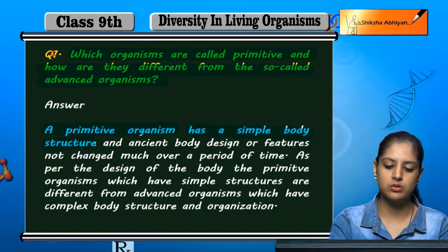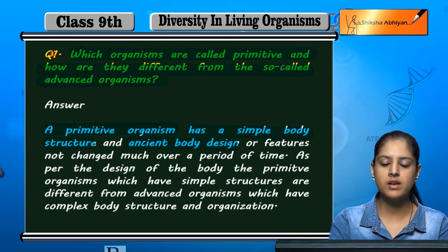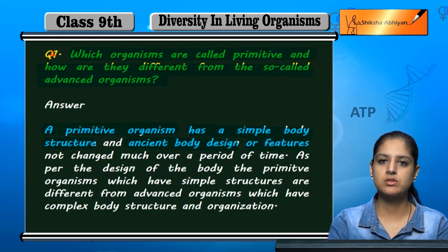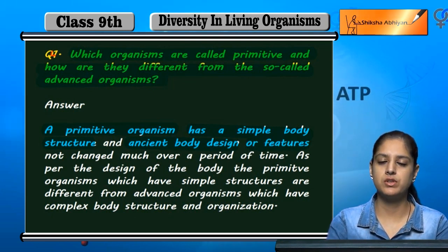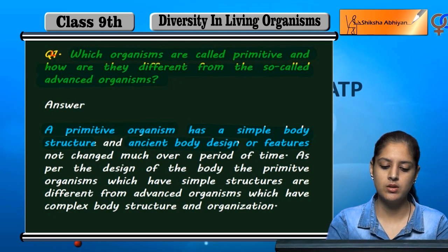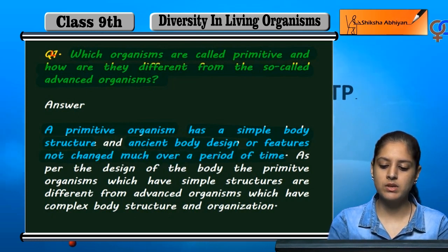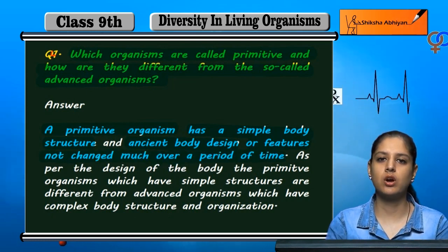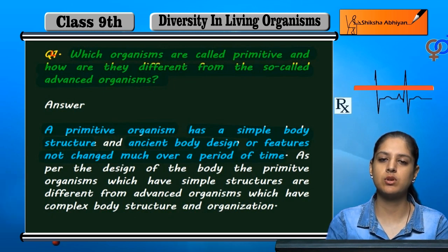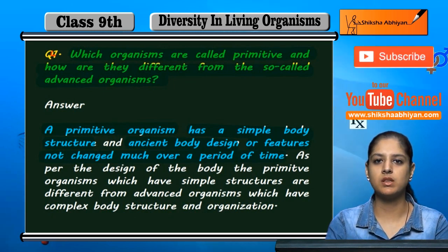A primitive organism has a simple body structure and an old design of the body. Its features are all old, ancient features, which have not changed over a very long period of time — they remain the same.